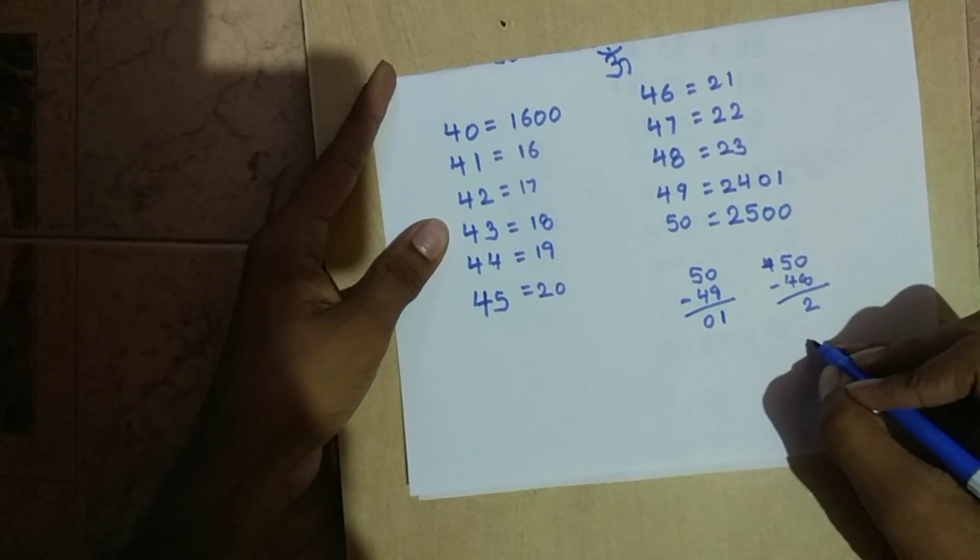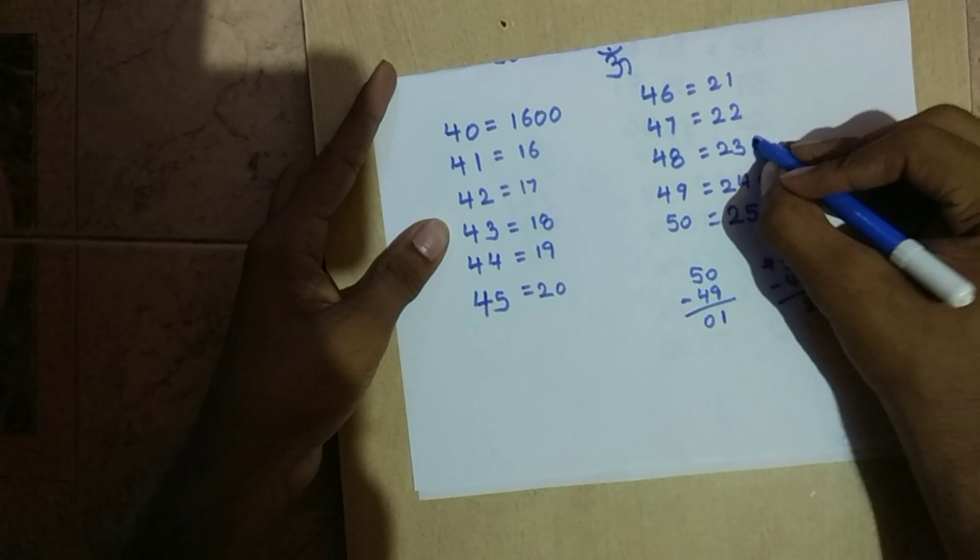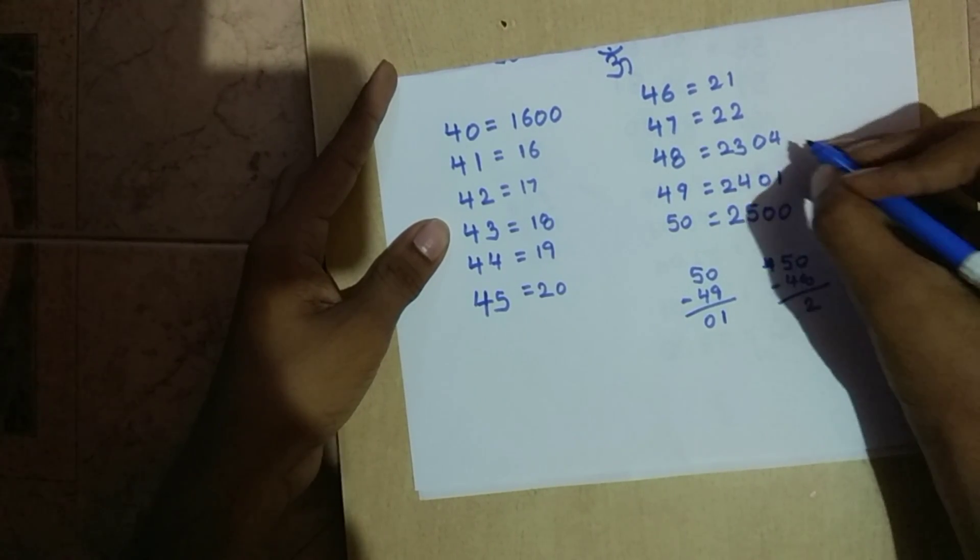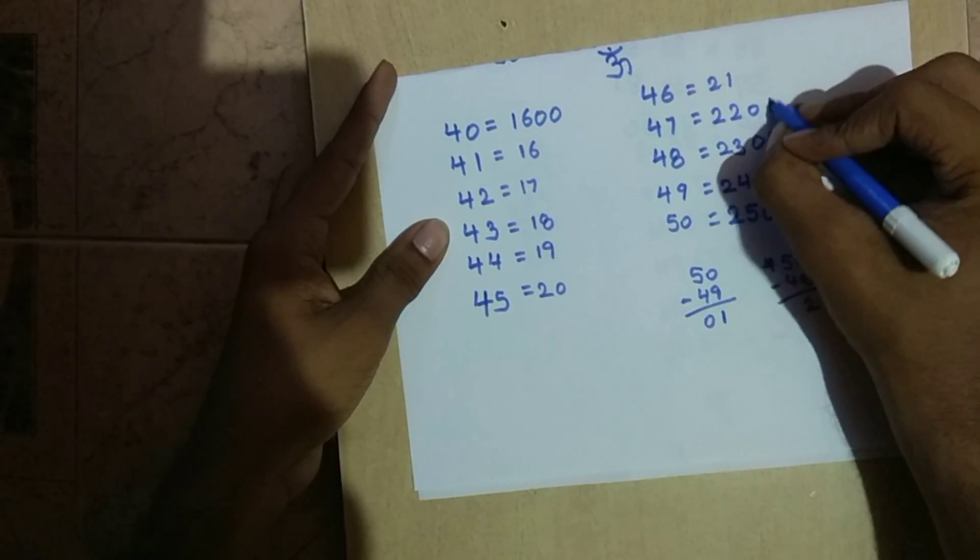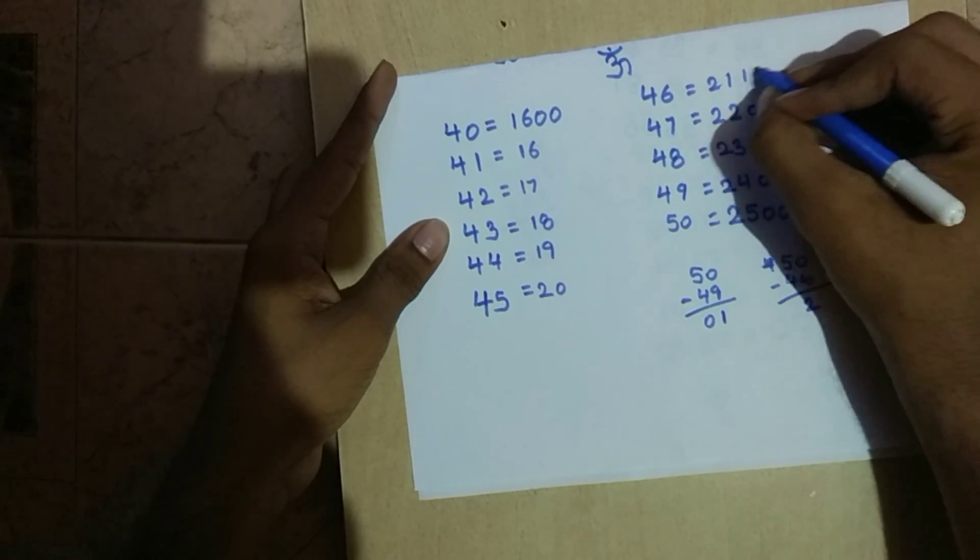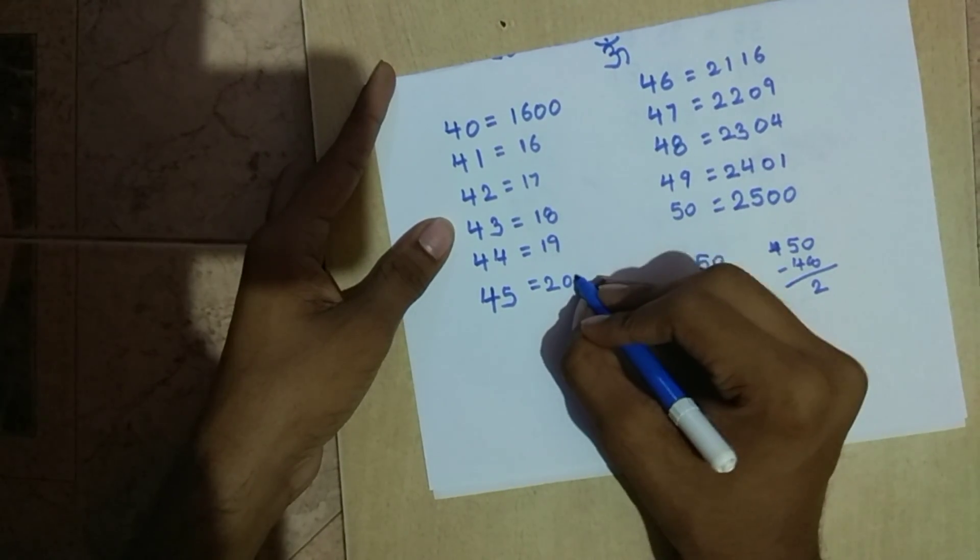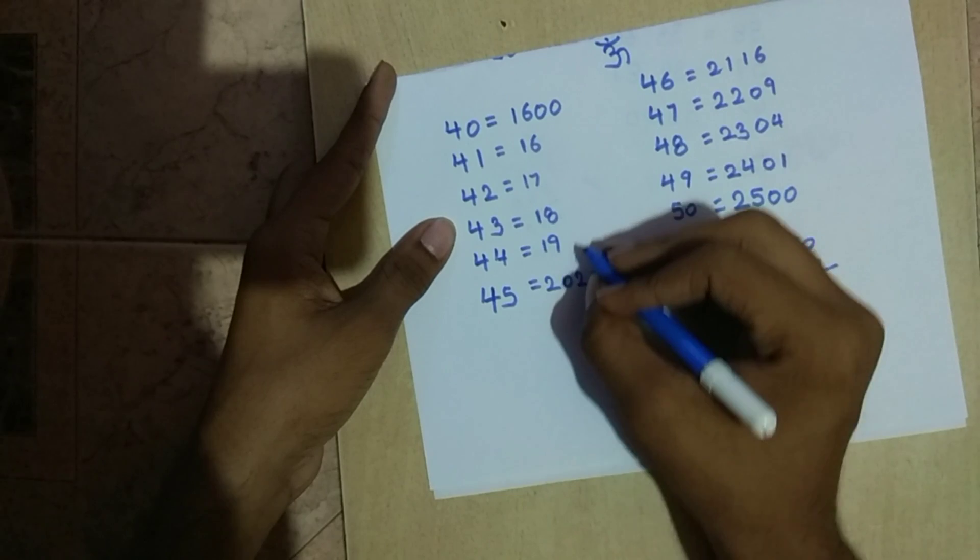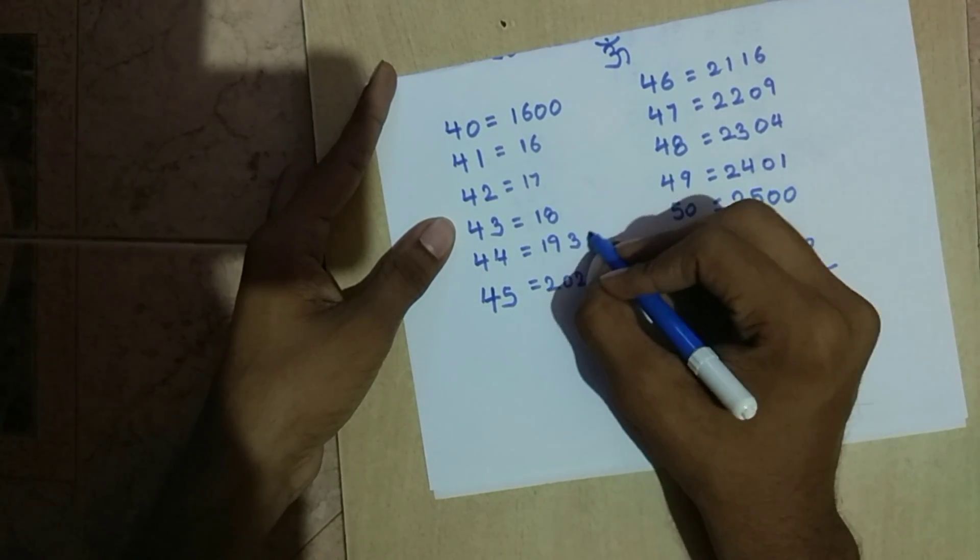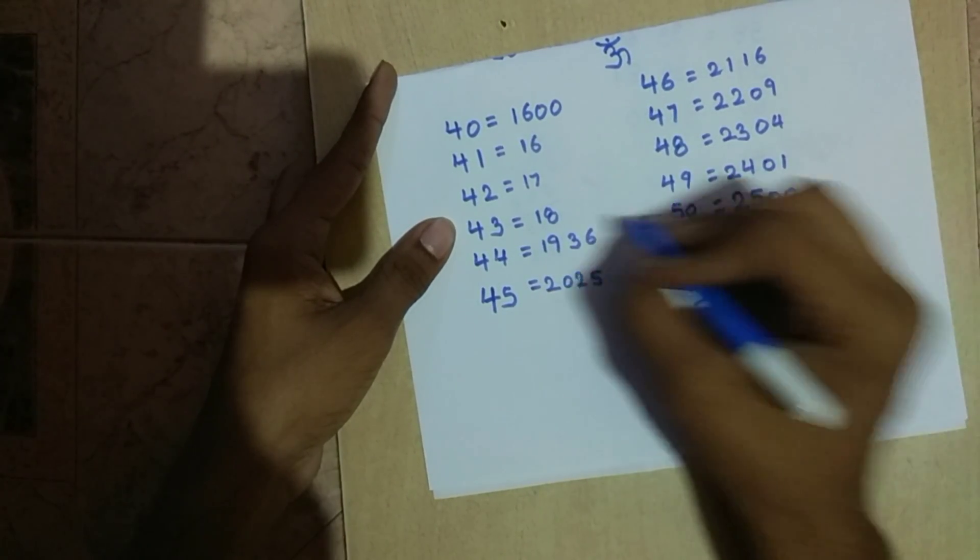Of 47 will be 09 and of 46 will be 16. So on, the next two numbers of 43 will be 49, of 42 will be 64, and of 41 will be 81.